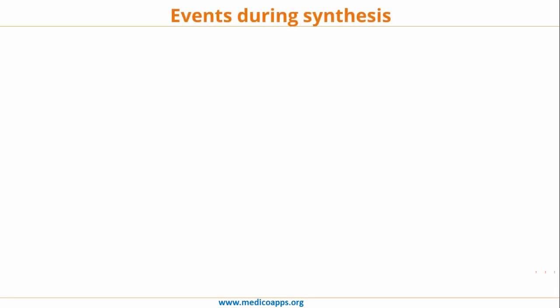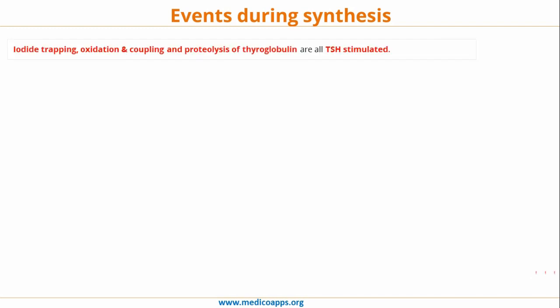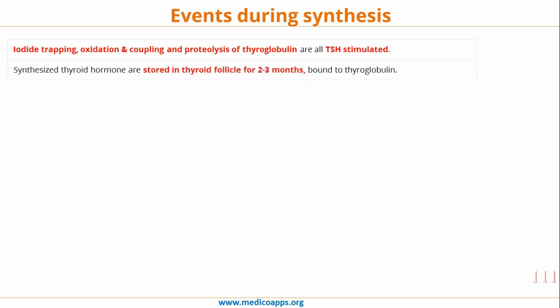To recap the most important points: iodine trapping, oxidation and coupling, as well as the proteolysis of thyroglobulin are all stimulated by thyroid stimulating hormone. The synthesized hormone is stored in the thyroid follicle for about two to three months, bound to thyroglobulin. Also, the sodium-iodine symporter is a form of secondary active transport.